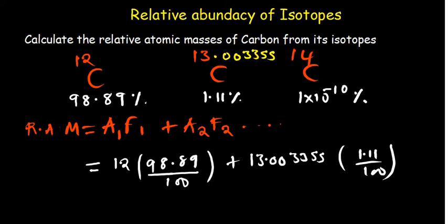The answer I'm getting is 12.0111372... Rounding off the answer to 4 significant figures, our answer becomes 12.01, which is the value that you see on the periodic table. It is derived from the isotopes of carbon.